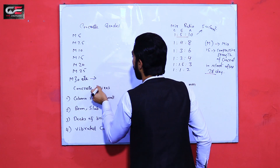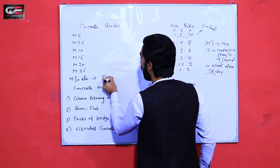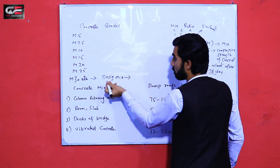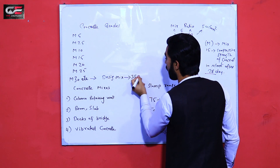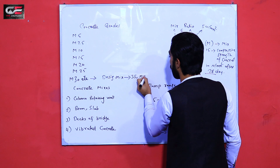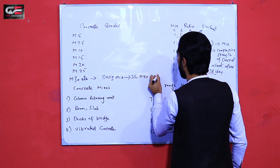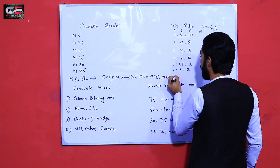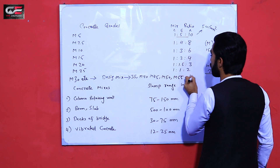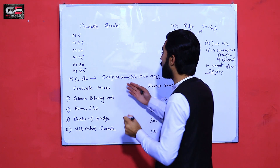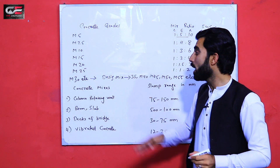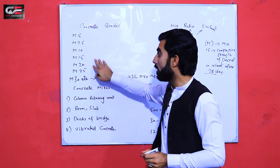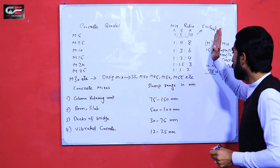After M25 we have M30, M35, M40, M45, M50, M55, and so on — these depend on design mix. So from M5 to M25 you have nominal mix ratios, while M30 and above are design mix grades.